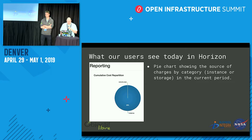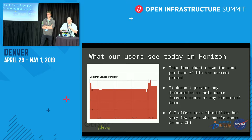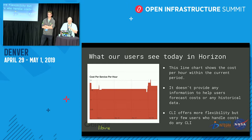In our case, a very small amount of the rate is volume size — everything is instances mostly. This line graph shows the cost per hour within the current period. It doesn't provide any useful information other than for the current period, and you can't go back in time with this display. The CLI for Cloud Kitty offers more flexibility, but there are very few users who handle the costs that understand how to use the CLI.